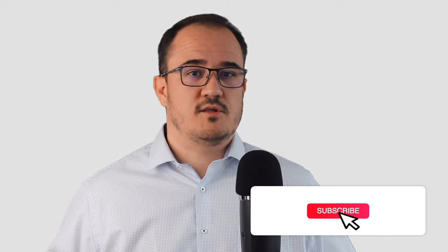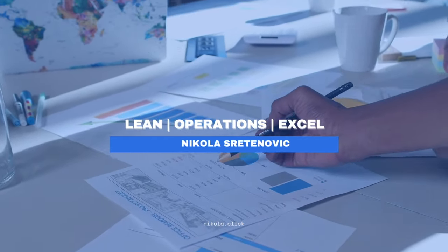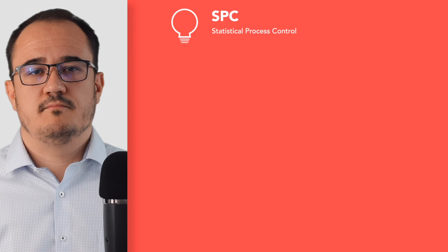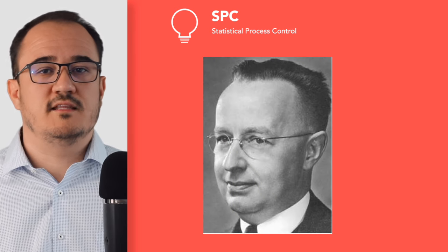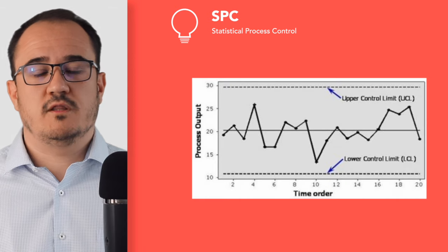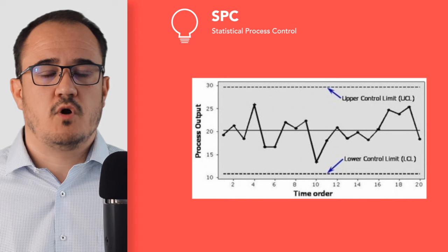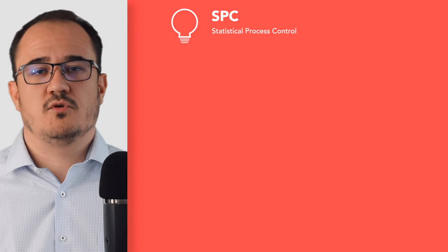If you want to make a lot of money for your company, start using SPC. Statistical process control is the real genesis of Six Sigma. Walter Shewhart developed SPC at the Bell Telephone Companies in the 1920s and in 1924 developed the Control Chart. Of all the things that work for multiple companies, SPC is without a doubt the most misused and underused tool.